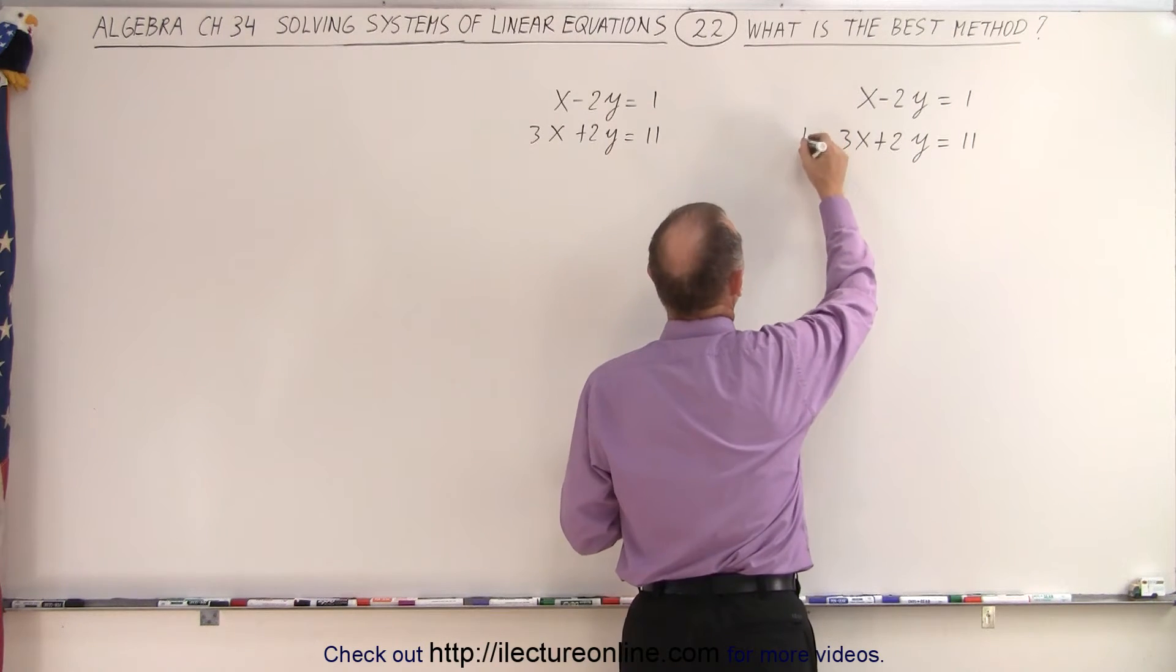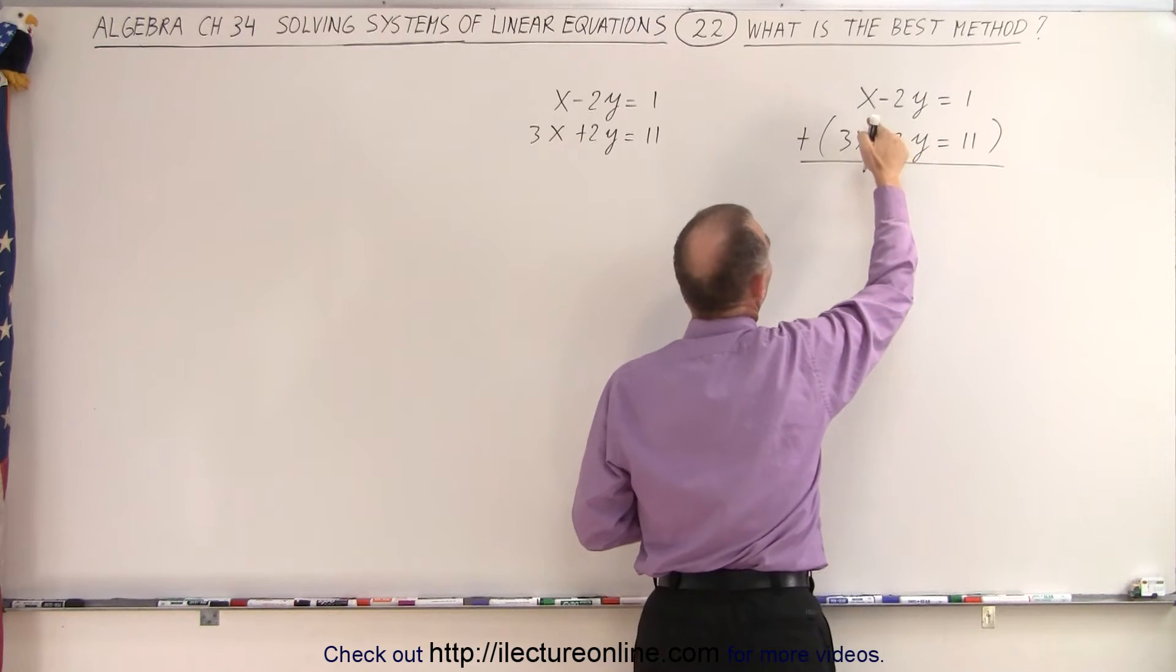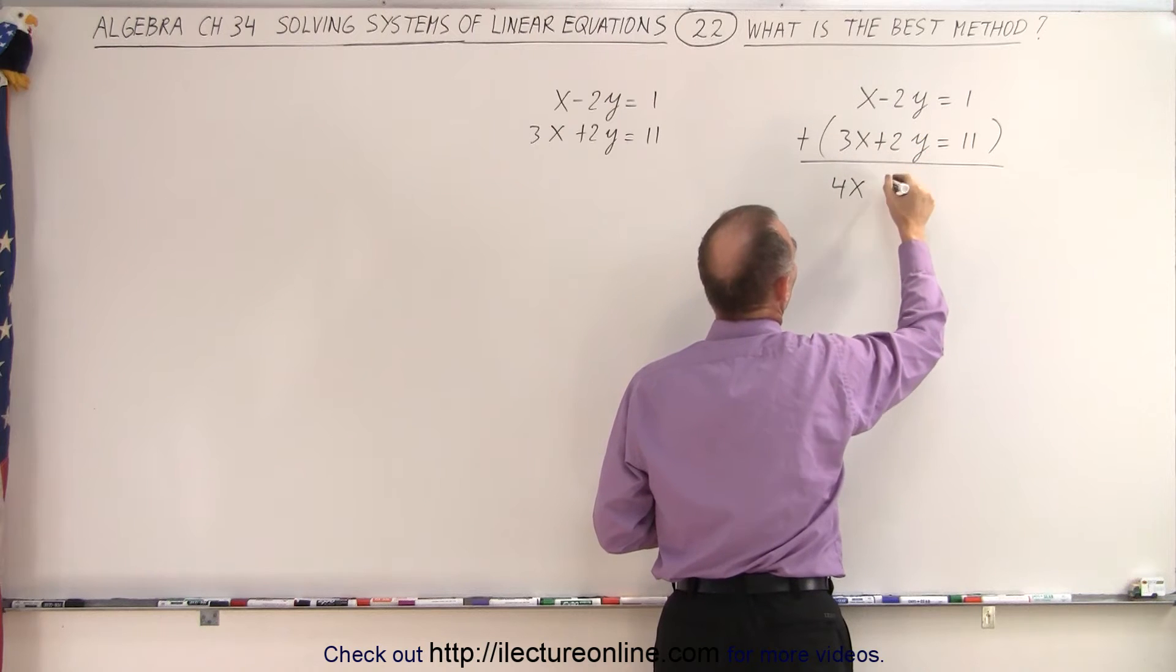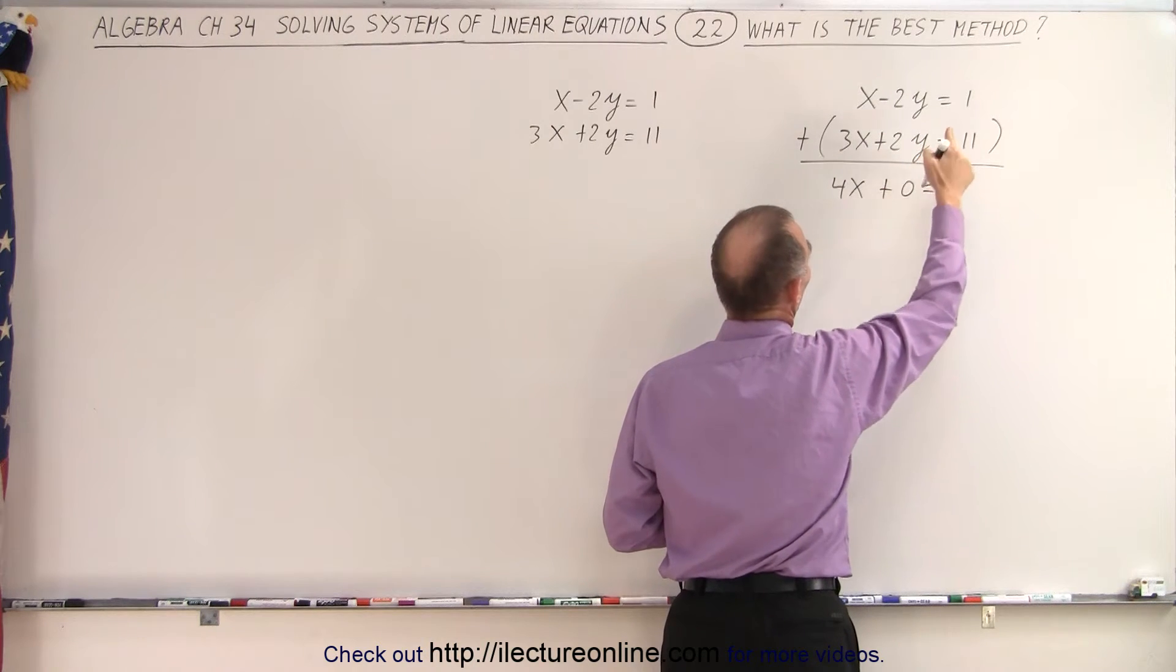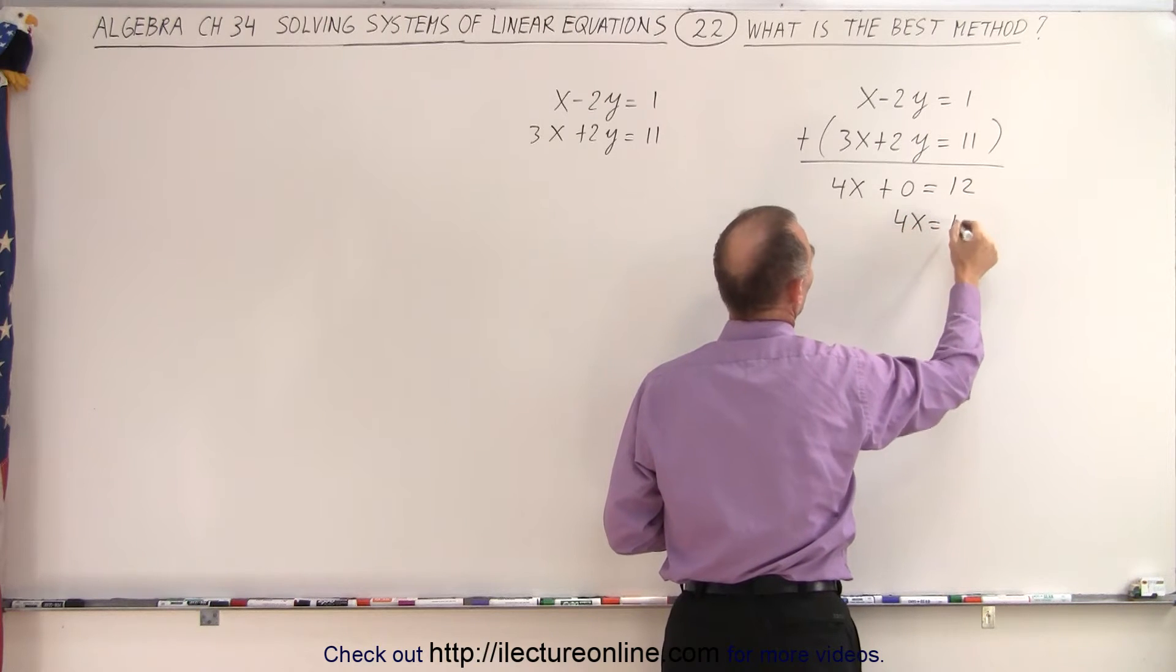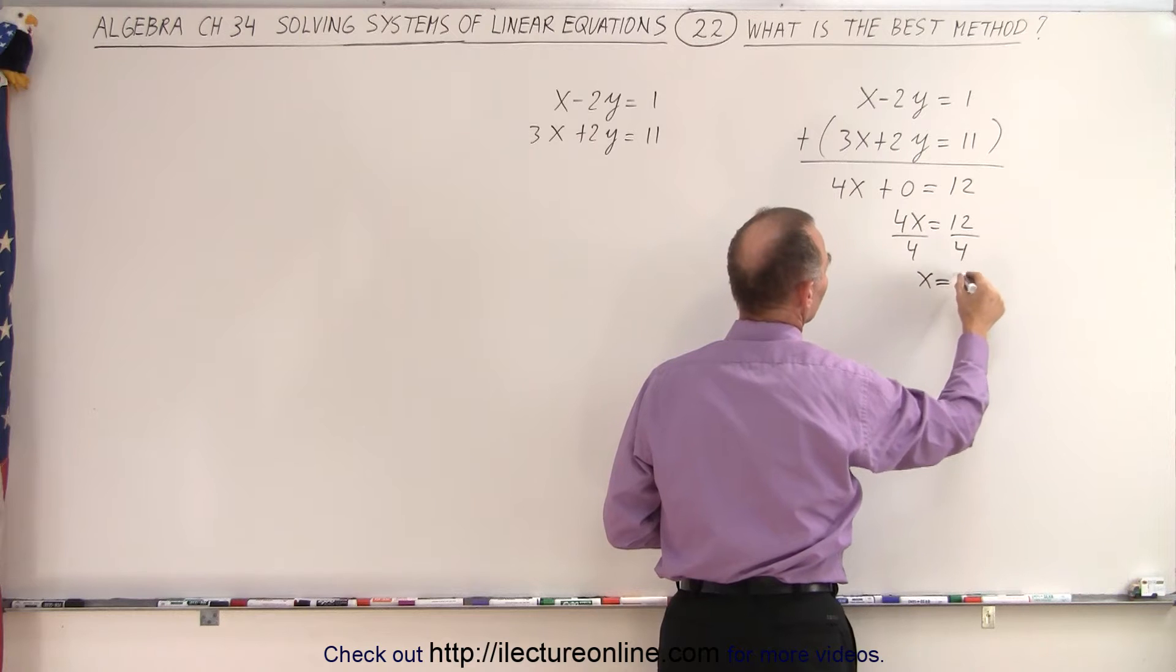So what we're going to do here is we're going to add the two equations together. So we get x plus 3x, which is 4x. A minus 2y plus 2y, which is 0, equals 1 plus 11, which is 12. So we end up with 4x is equal to 12. Divide both sides by 4. And so x equals 3.